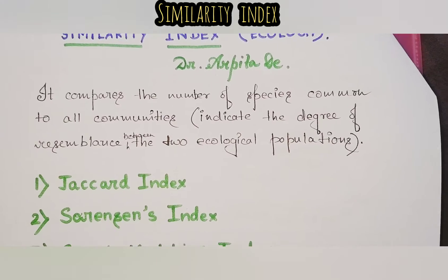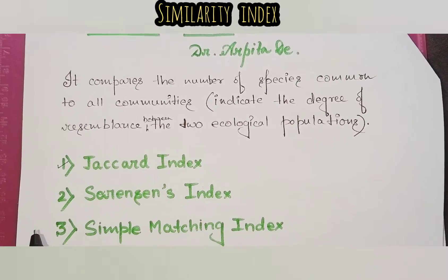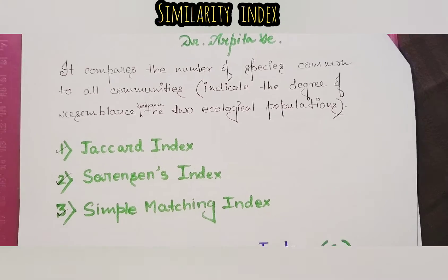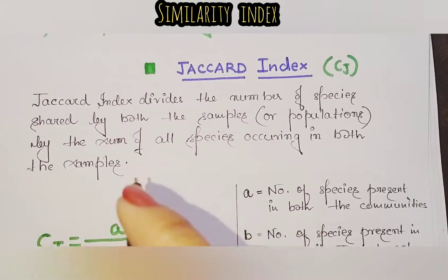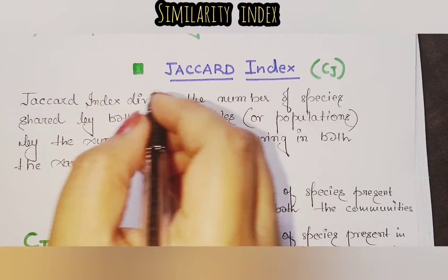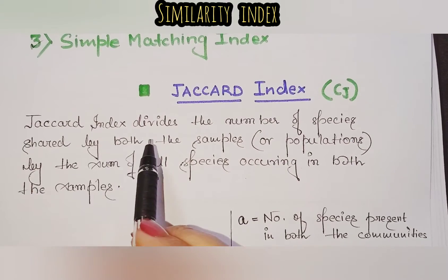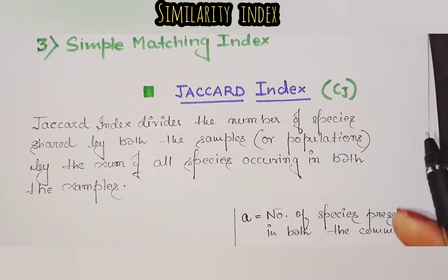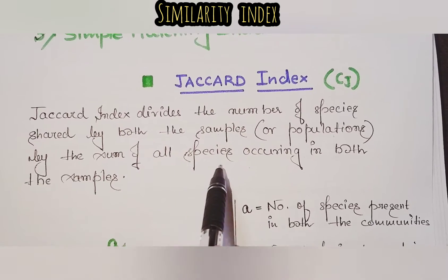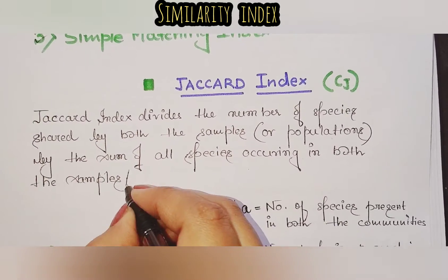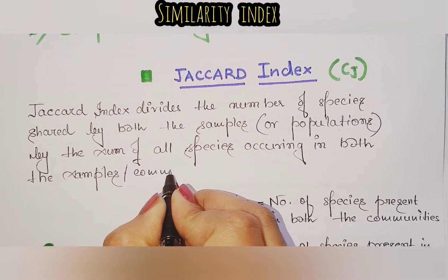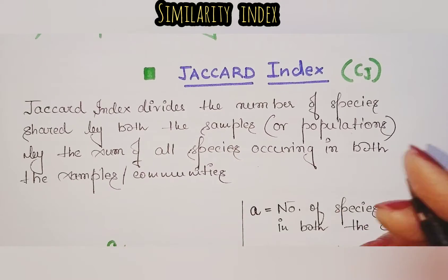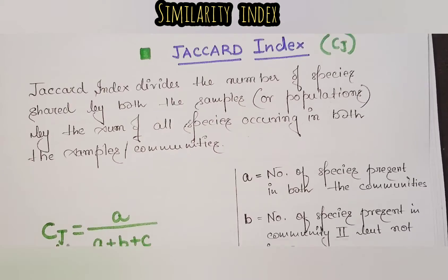Under this heading we will study three indices: the Jaccard index, Sorenson's index, and the Simple Matching index. The Jaccard index divides the number of species shared by both the samples or communities by the sum of all species occurring in both samples.